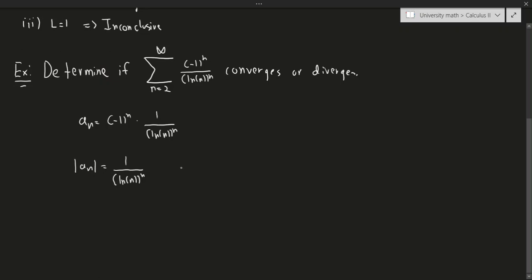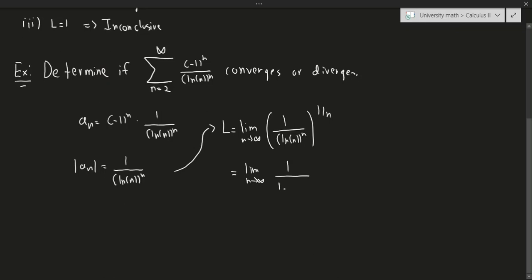So we have to compute L. L is equal to the limit as n approaches infinity of 1 over the natural log of n to the n, raised to the 1 over n. The n's cancel, so we get the limit as n approaches infinity of 1 over the natural log of n. Plugging in infinity gives 1 over ln(infinity), which is 0, and 0 is less than 1. Therefore, this series is convergent.